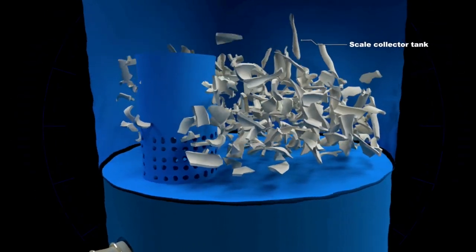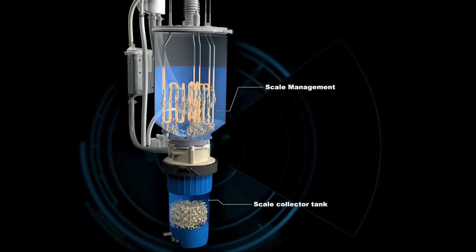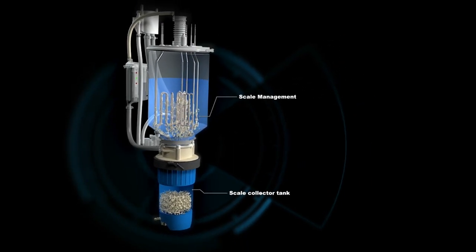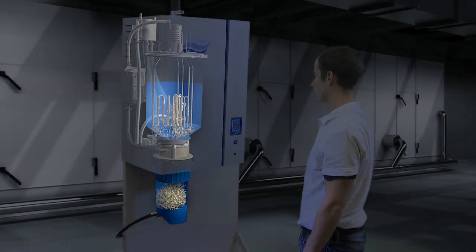The cold water pool directly above the scale collector tank also prevents scale from blocking the water inlet or drain orifice.